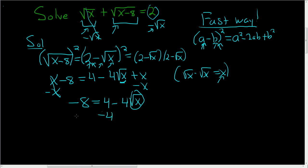Subtract 4. So we get negative 12 equals negative 4 square root of x. All right, we're almost done.